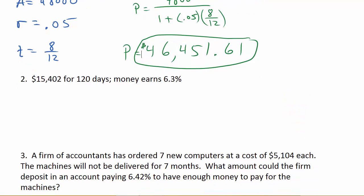Alright, so we've got $15,402 for 120 days. Money earns 6.3%. So we have P is equal to A over 1 plus RT. So let's go ahead and get our values. So A is 15,402, R is 0.063, and T, that's 120 days. So that's going to be 120 over, and how many days are in a year? 365.